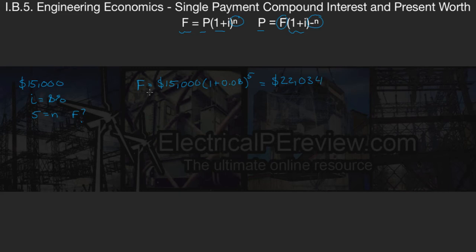Now, what happens if after five years he decides not to withdraw it and he waits until 10 years? So now we have N equals 10. Assuming the bank is going to honor the same interest amount of 8%, what is his new future amount?